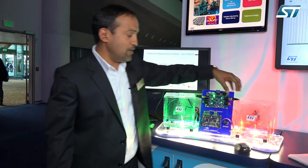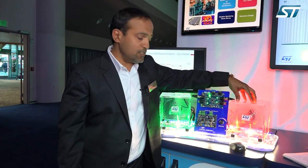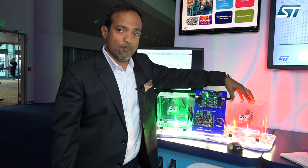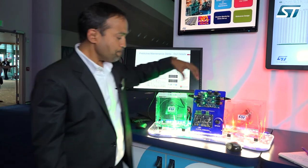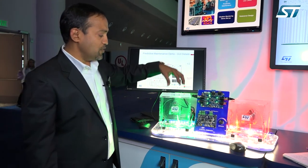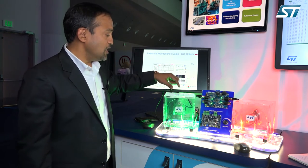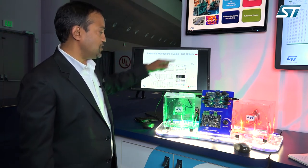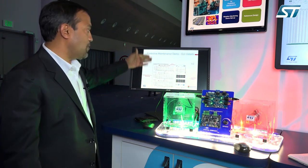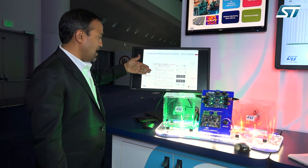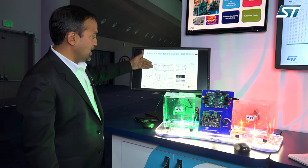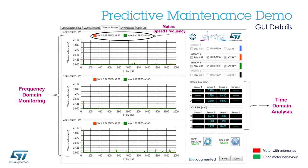The same thing is happening on this side of the setup with the bad motor. The data that we are capturing by means of these sensors on these motors is passed on to the PC and plotted on a graph showing the XYZ axis of frequency and amplitude being captured on these motors.